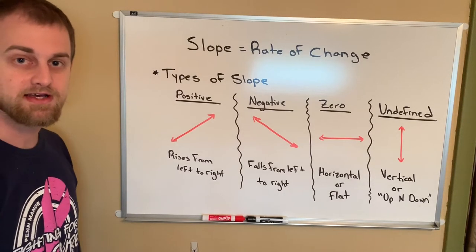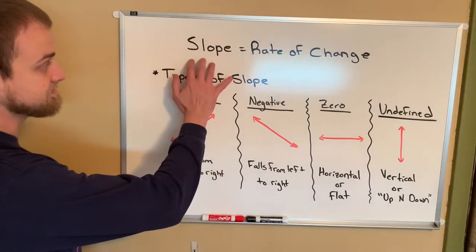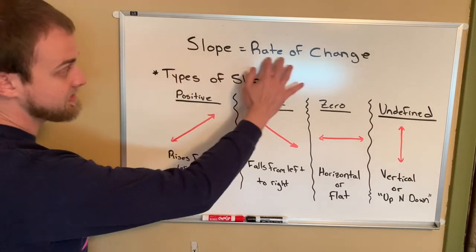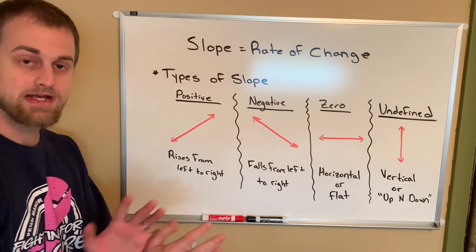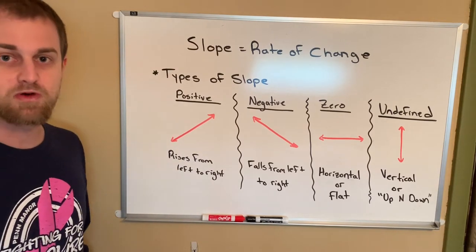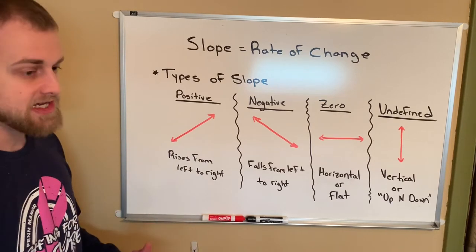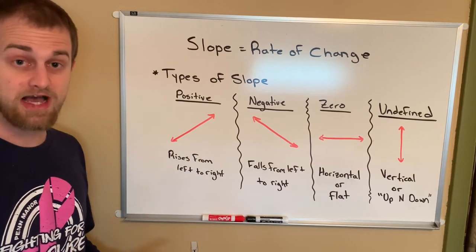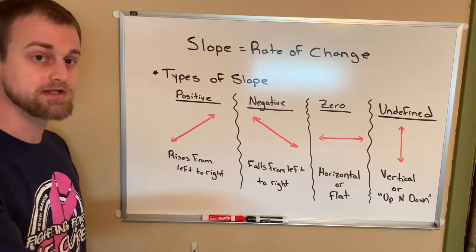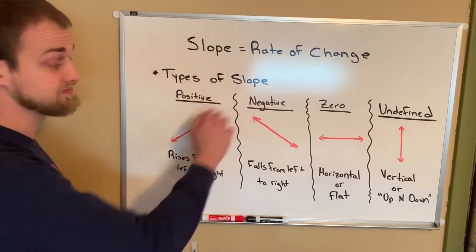Hi guys, welcome back. Mr. Starry again. Today what I want to talk about is this idea of slope. First thing we want to talk about is that slope and rate of change are interchangeable in nature, meaning they're the same thing. But what is slope? What is rate of change? For our purposes, slope and rate of change are a number or a value that describe the behavior of a line. Now we're going to get more into that in the days to come. So what I want to start with is just the different types of slope that we have.